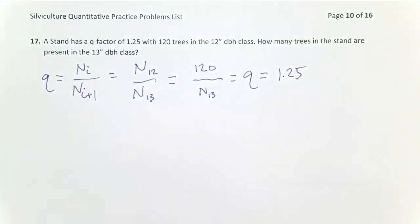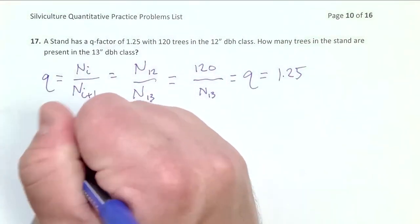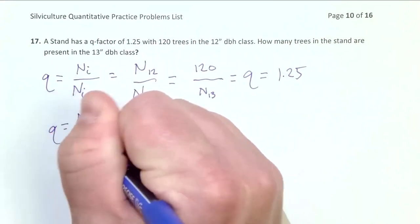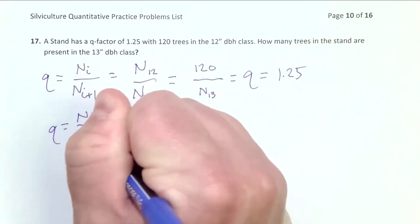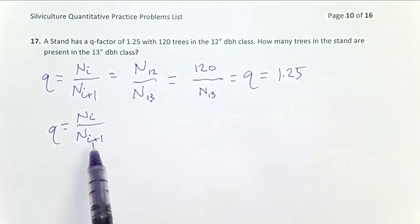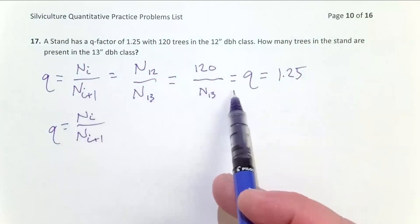To solve this problem, I can simply reorganize this algebraically. Q equals N sub I over N sub I plus 1, and I want to solve this for N sub I plus 1, because that's what I'm trying to determine. That's the number I need.